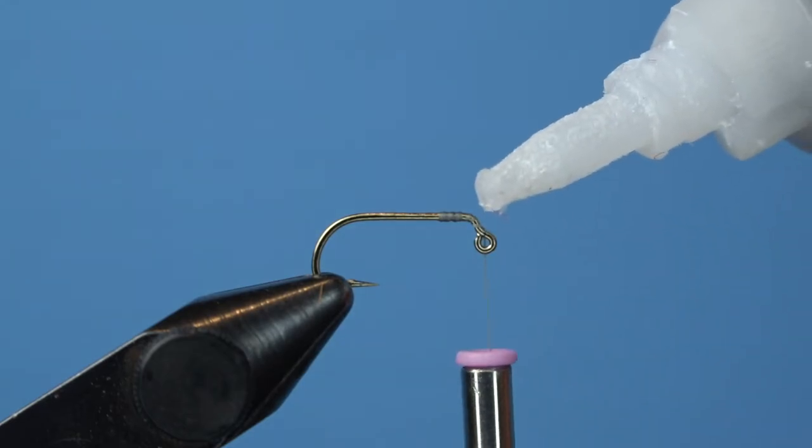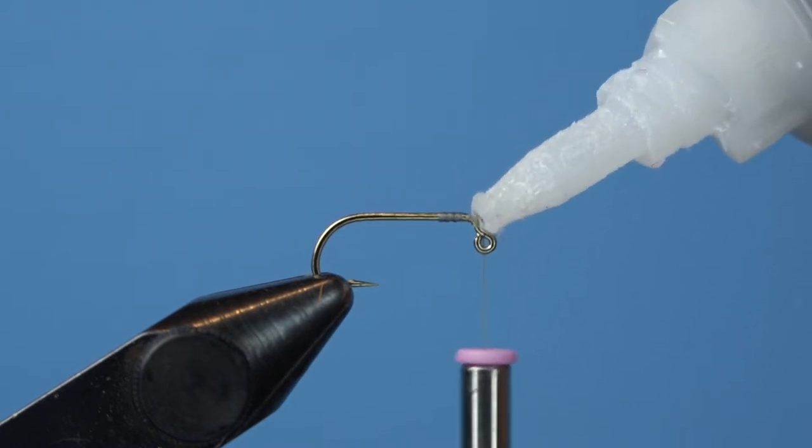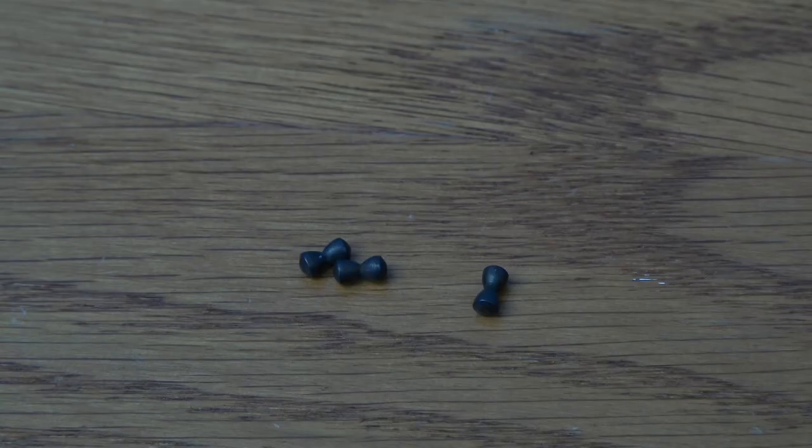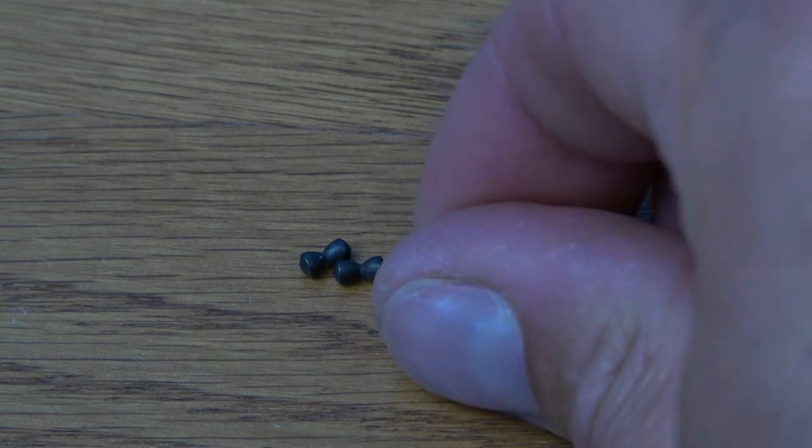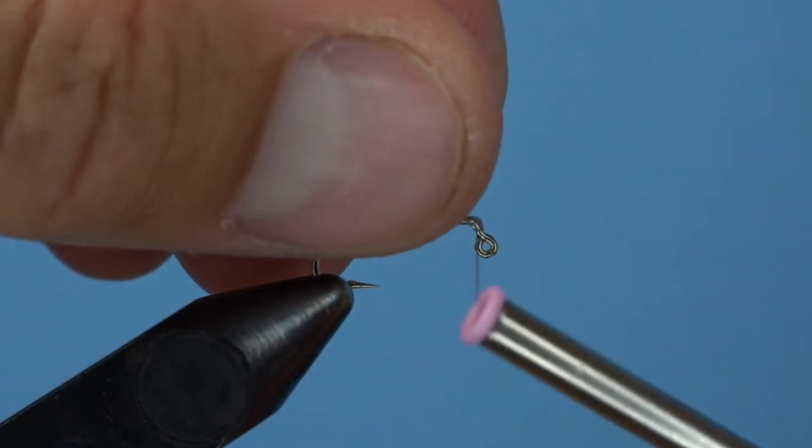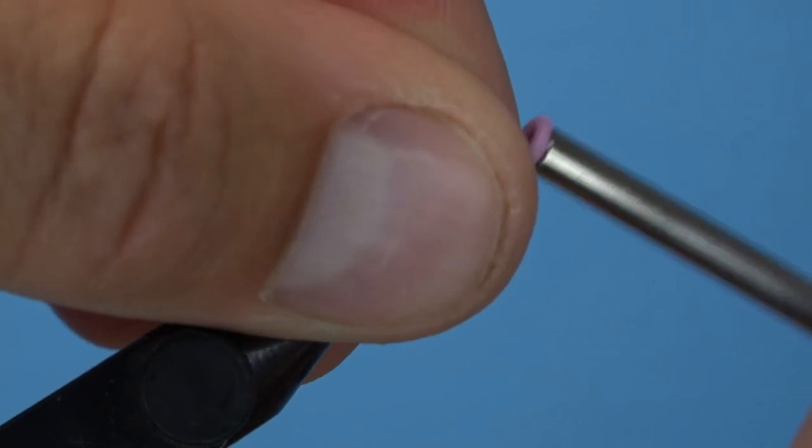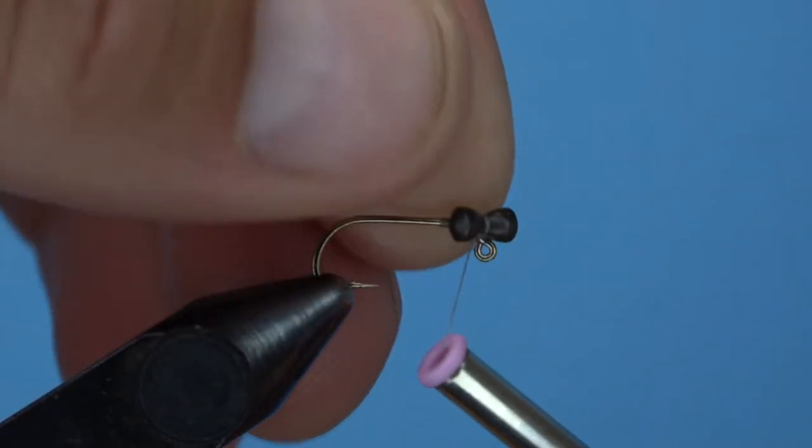Add a dab of gel-like superglue to your tie-in point before grabbing some black 1/100th ounce barbell style eyes. These are going to ensure the hook rides upright through the water and will help keep a vertical presentation throughout the drift. They're simple to tie in too.